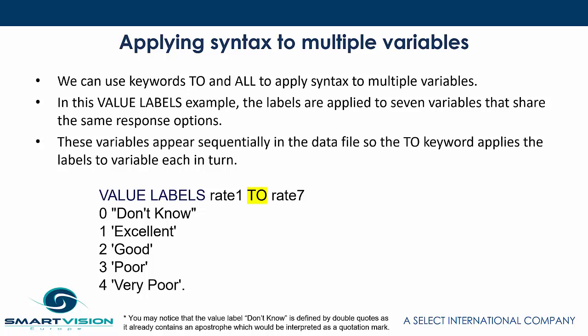If you're working with syntax and you have to apply it to a whole bunch of fields rather than typing in all of the field names individually — you might have a very long list — you can use something like TO. Here we have an example where TO is helping us apply syntax to seven variables that share the same response options. They're very common with rating scales where people are asked to rate or evaluate a number of different things.